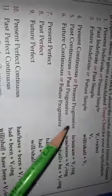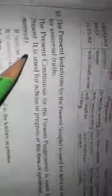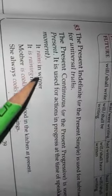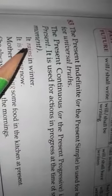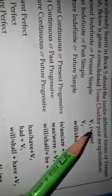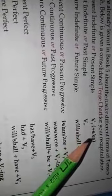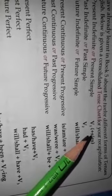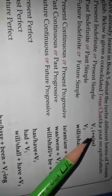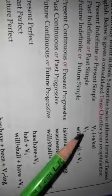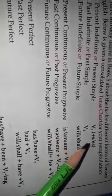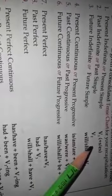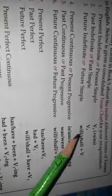Suppose here is an example. Look down — 'It rains in winter.' The verb form there is 'rains', R-A-I-N-S. In your chart, it is given as verb 1 plus S or ES. If it is third person singular number, you write S or ES — some verbs add S and some add ES.